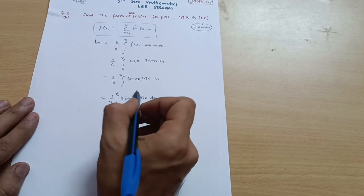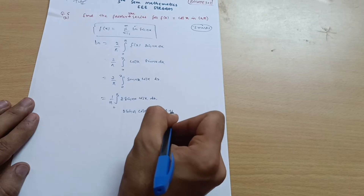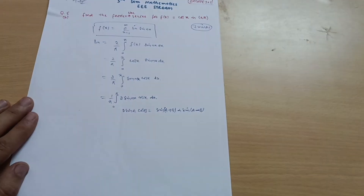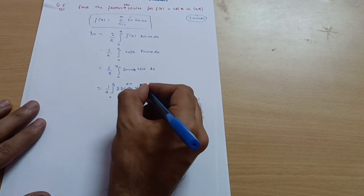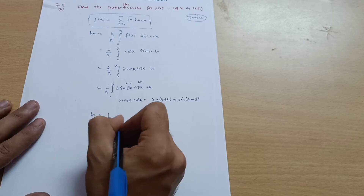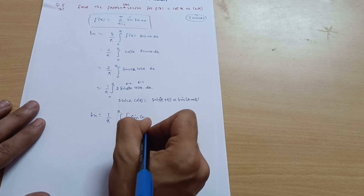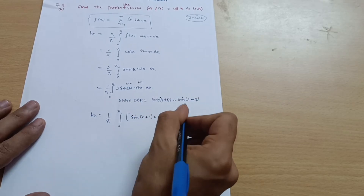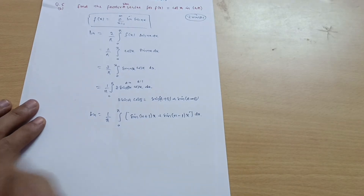Now we apply the trigonometric product formula: 2·sin(A)·cos(B) = sin(A+B) + sin(A-B). Here, the coefficient of x in sin(nx) gives A = n, and the coefficient of x in cos(x) gives B = 1. So b_n = (1/π) ∫₀^π [sin((n+1)x) + sin((n-1)x)] dx.